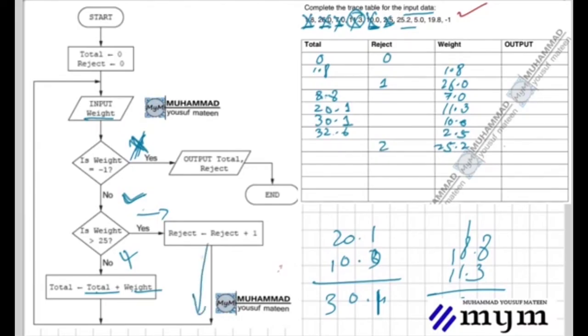After that, we loop back. Now we have 5.0. We input 5.0, check if it's minus one - no. Is it greater than 25? No. So the total condition executes: 5.0 plus 32.6 equals 37.6.